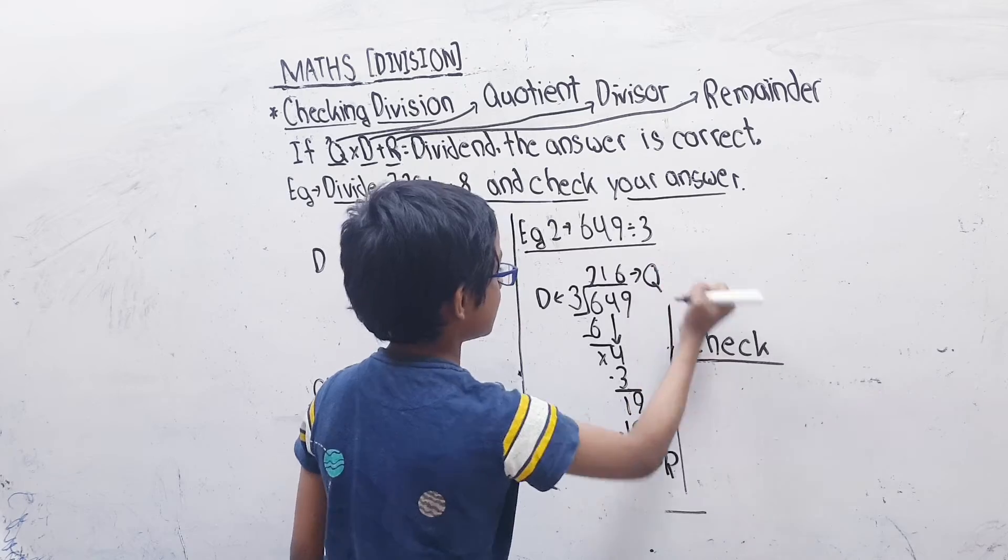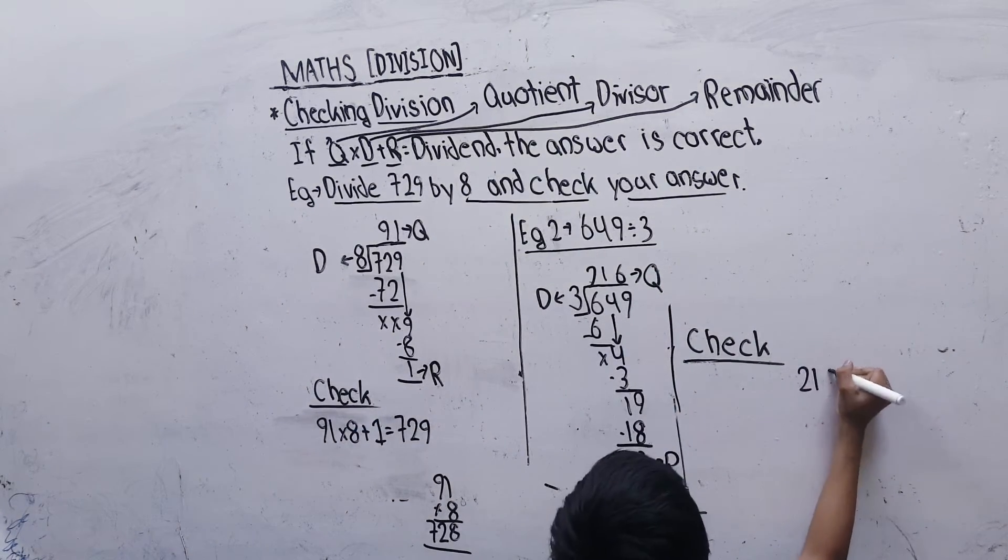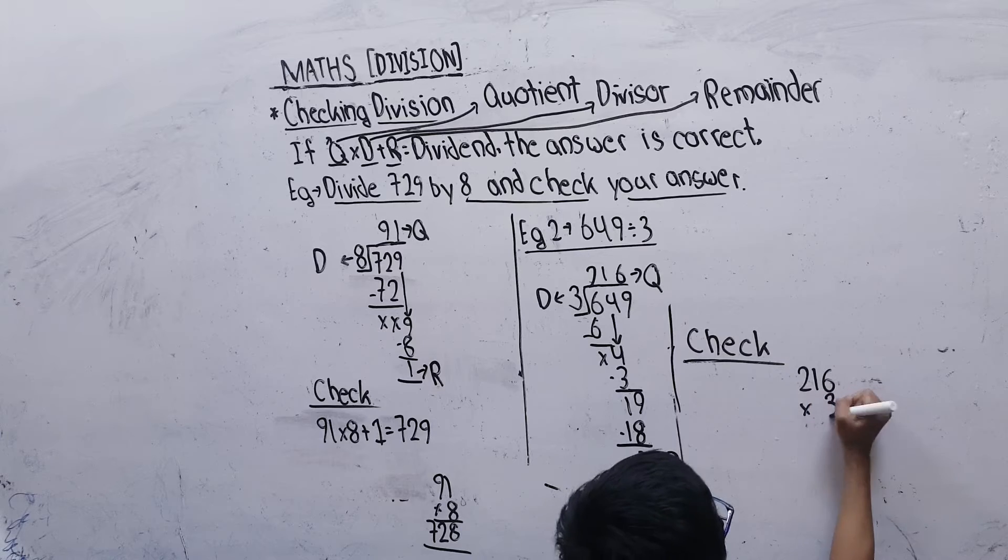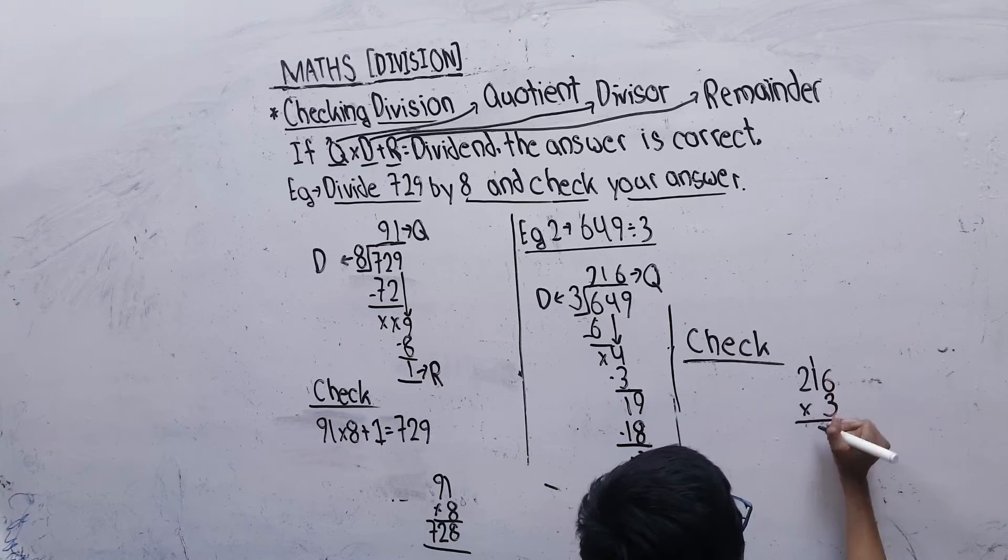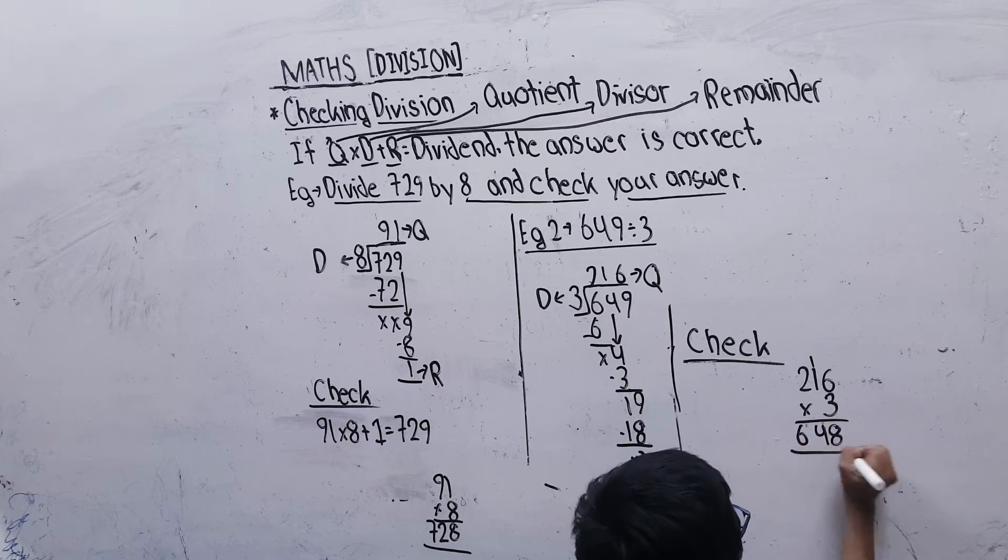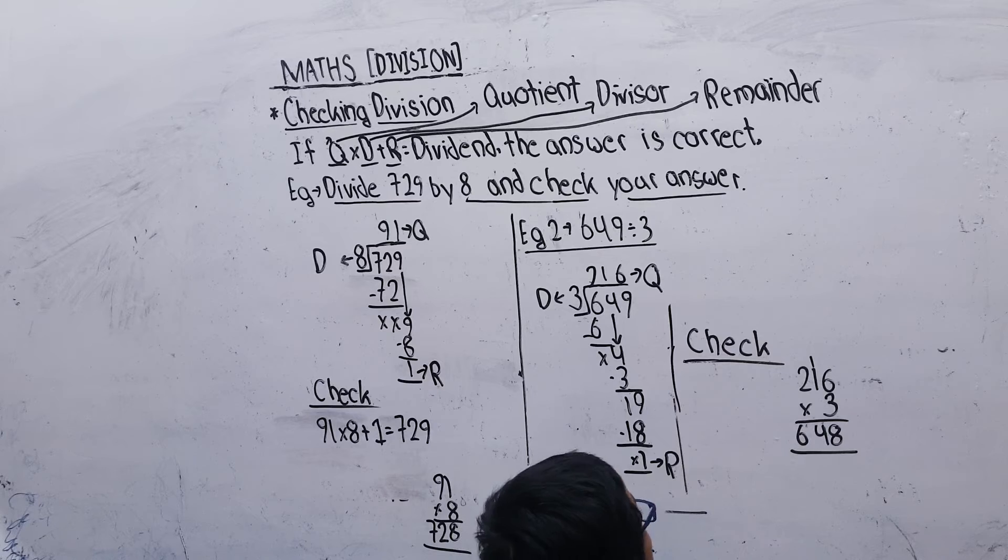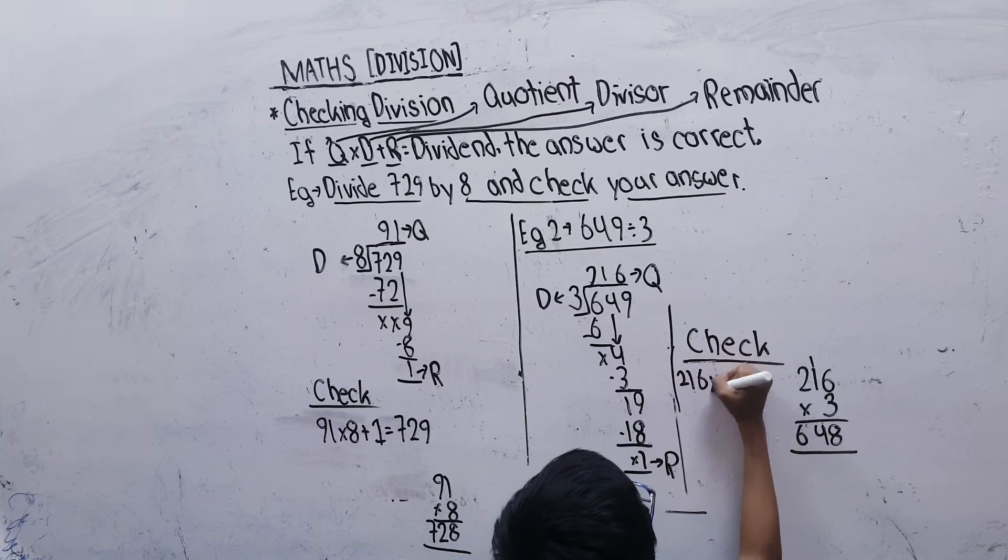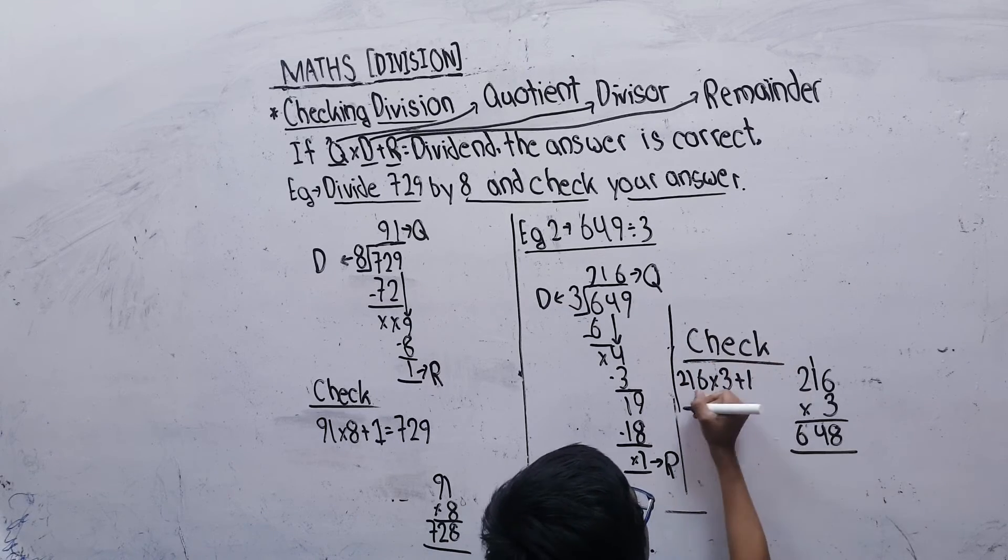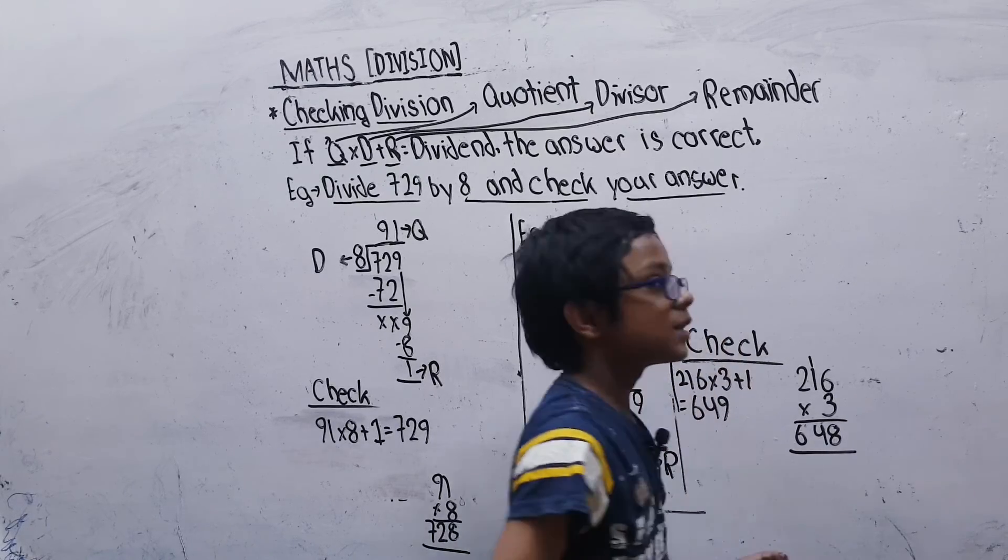We will multiply 216 by 3: 3×6=18, 3×1=3, 3×2=6. We get 648, and if we add 1, it's 649. So our answer is correct: 216×3+1=649.